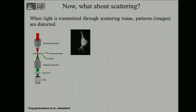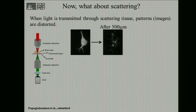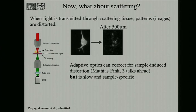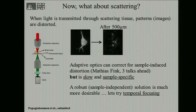Now, what about scattering? When light is transmitted through turbid tissue, patterns or excitation regions are distorted. If we look after 500 microns, a nice neuron shape is completely converted into a speckle pattern. It's very difficult to photo-excite a neuron with a speckle pattern because you're not sure exactly where the peaks of the speckle would fall. Adaptive optics can correct for sample-induced distortion, but it is slow — you have to learn the scattering matrix of the sample, and it's sample-specific, requiring relearning at every different location.